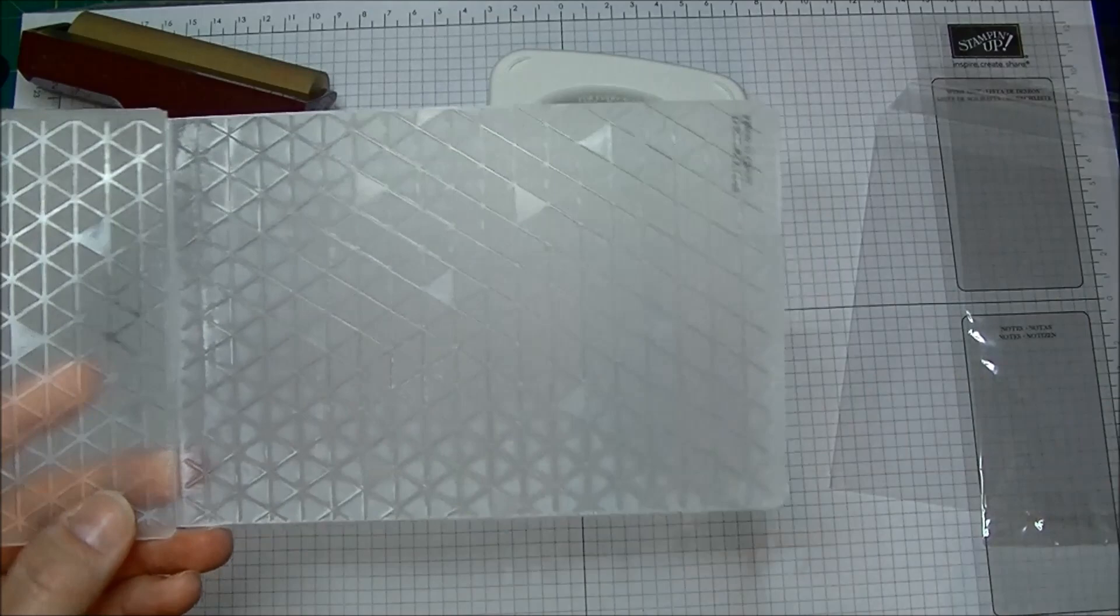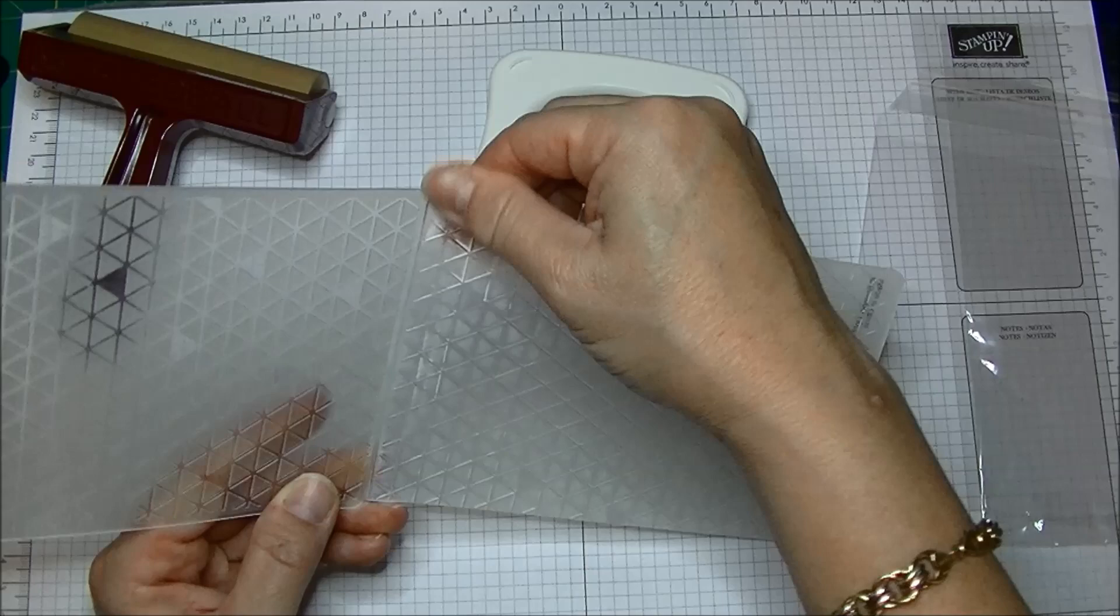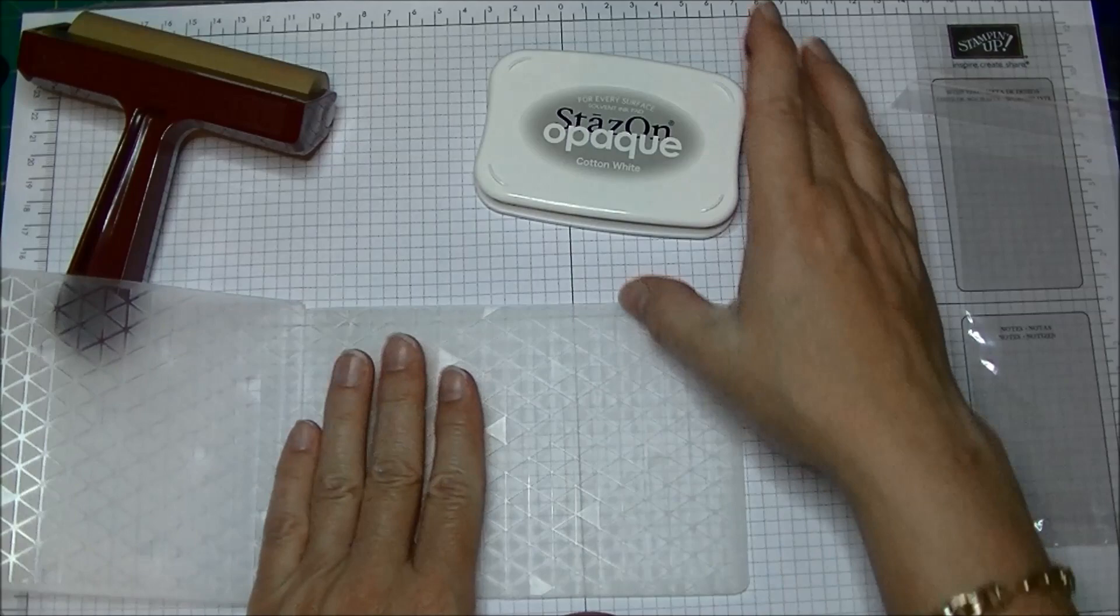You're going to take an embossing folder and you can see I've used this already and it is going to stain a little bit. I did try the Stazon Cleaner. It won't hurt any future projects that I make so I'm not too worried about it.